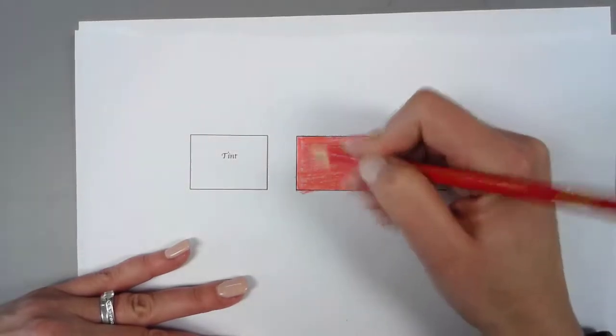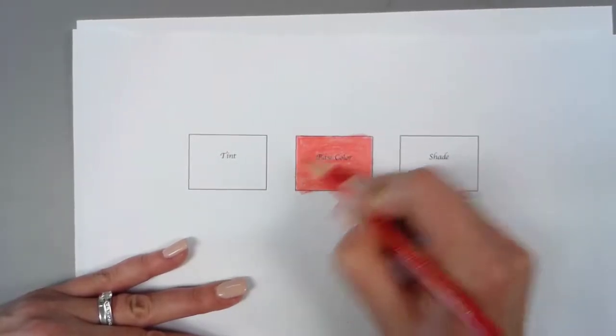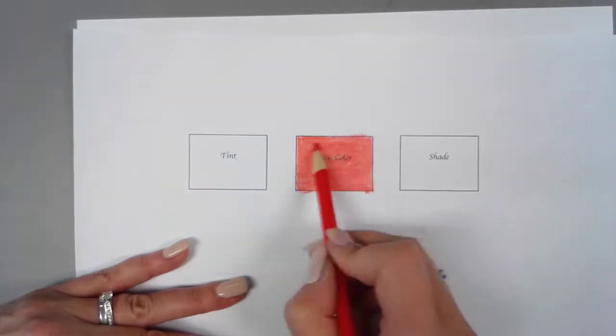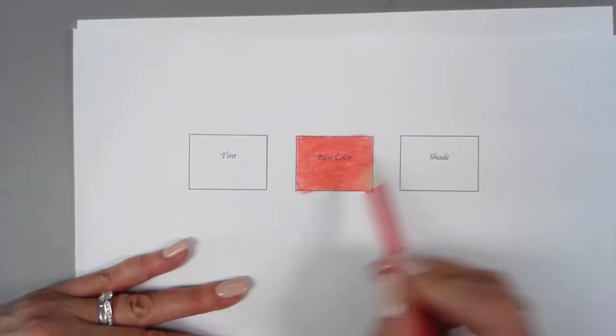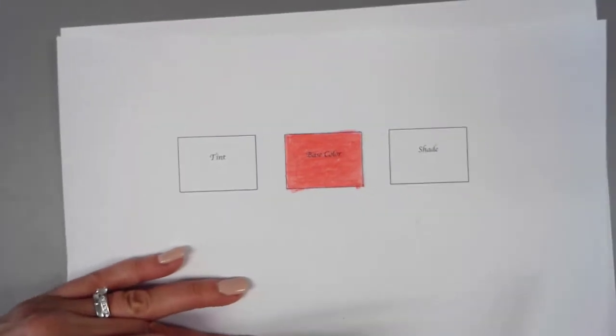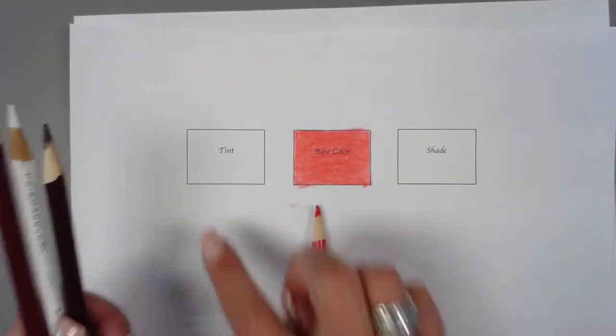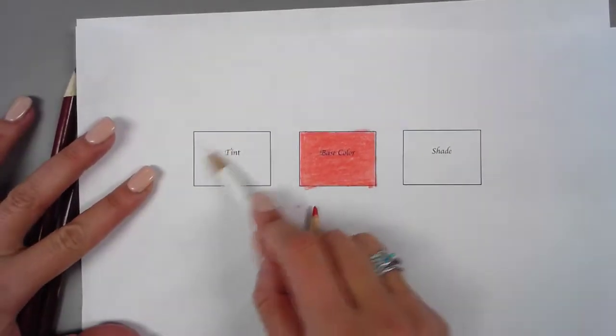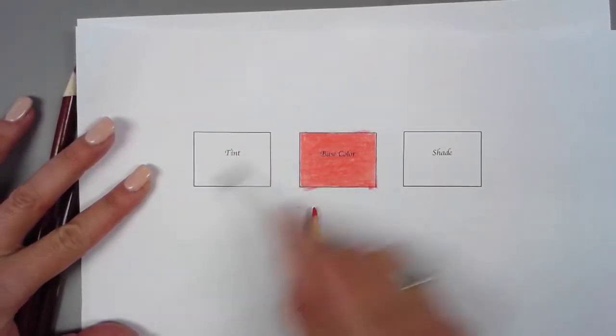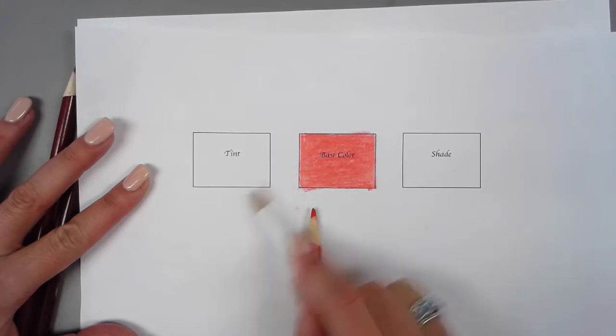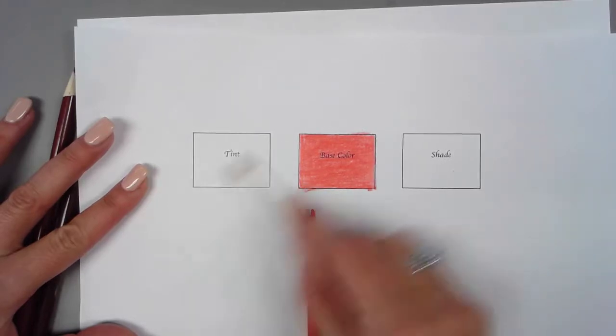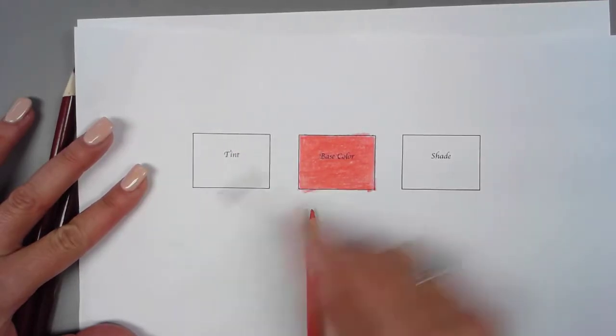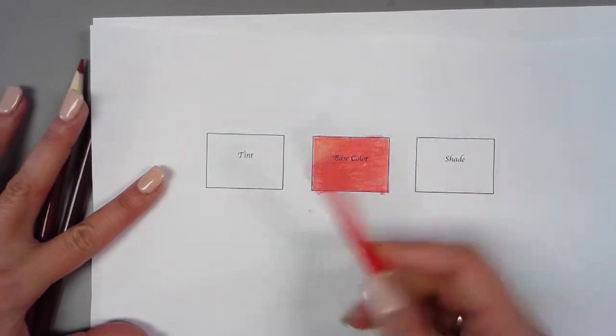Okay, so I'm alternating it, crossing it different directions, filling the grain of the paper to get a solid base coat. And then for your tint, you're going to use white underneath. Put a little bit of white down everywhere. Can't really see where it's going, but you know it's there.